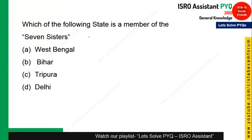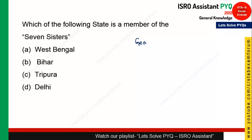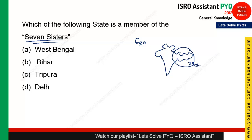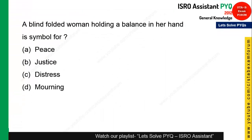The next question is from geography: which of the following states is a member of the Seven Sisters? The northeast portion of India has seven states called the Seven Sisters. Tripura is one of the Seven Sisters, while West Bengal, Bihar, and Delhi are not. The Seven Sisters include Tripura, Meghalaya, Assam, Arunachal Pradesh, Nagaland, and Sikkim. The answer is option C.